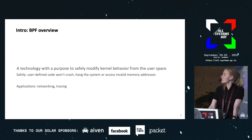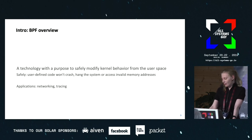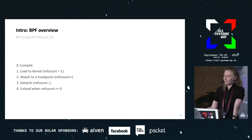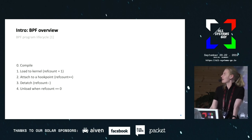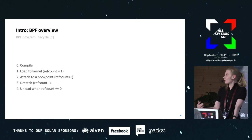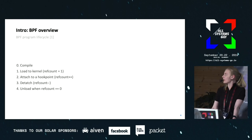It won't access invalid memory addresses, and so on. The major applications are networking and tracing. When a user wants to modify kernel behavior, they write a program. The life cycle of this program: you need to compile it, load it into the kernel, and attach it to some hook point. Don't forget to detach when you no longer need it — the ref count is essential; the program is alive as long as there is a reference to it.